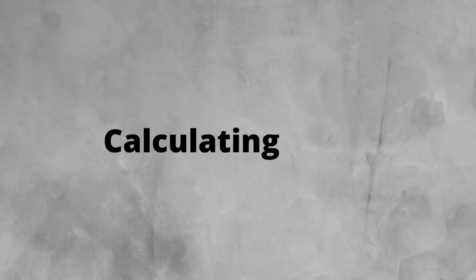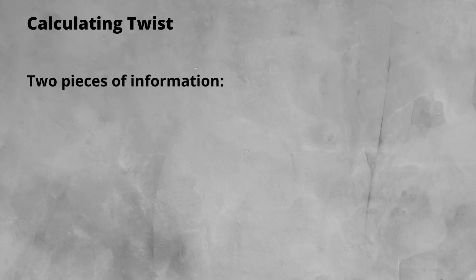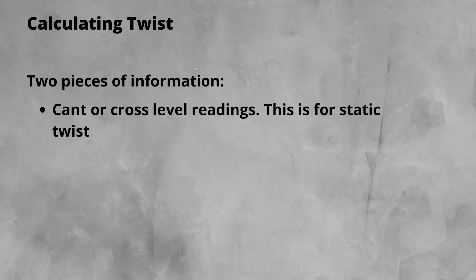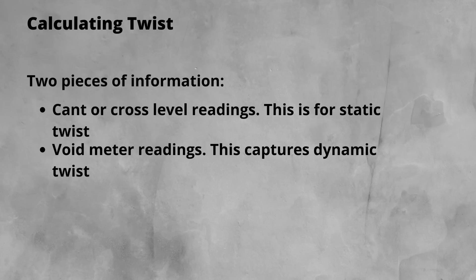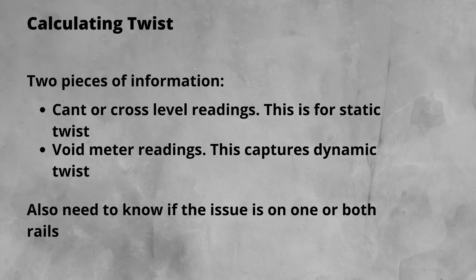So how do we calculate the level of twist? The two things you need to know to calculate the level of twist through a site: cant or cross level readings, this gives a static twist value, and any readings from void meters. This ensures you account for any dynamic twist through the site. The next thing to consider is if the issue is on one rail consistently or changes.